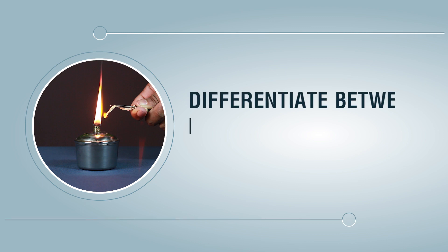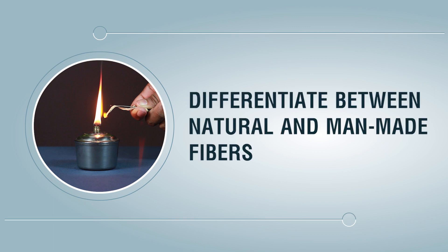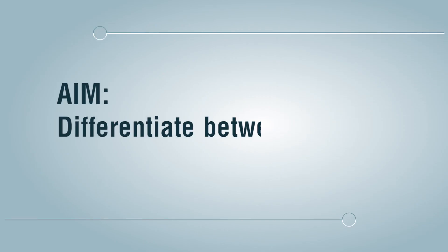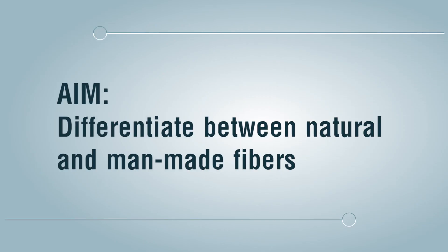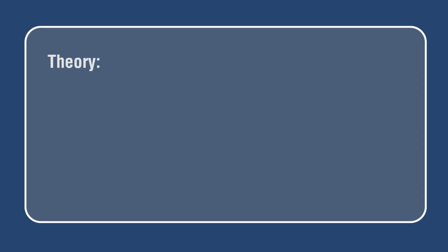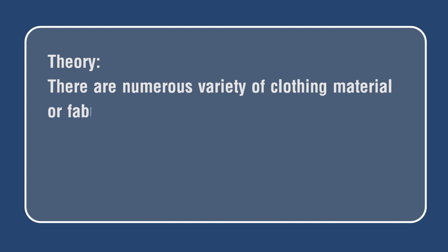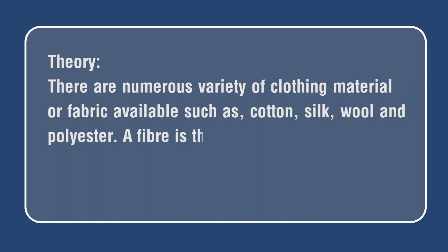Differentiate between natural and man-made fibers. Aim: differentiate between natural and man-made fibers. Theory: there are numerous varieties of clothing material or fabric available such as cotton, silk, wool and polyester. A fiber is the most basic building block of a fabric.